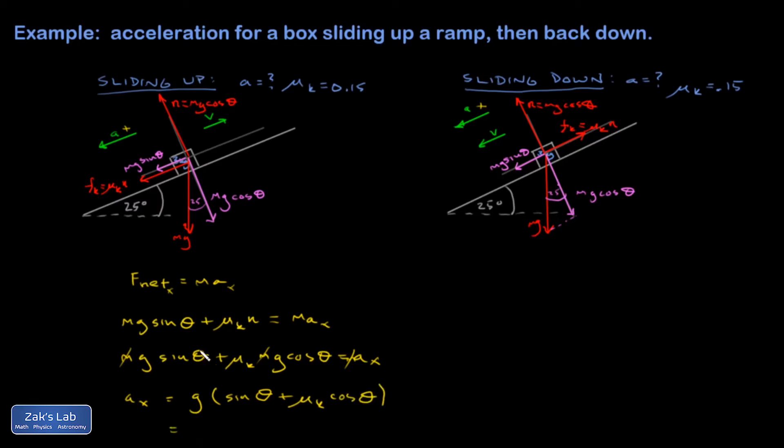And I can plug all the stuff in and find a value for a. So this 9.8 sine of 25 degrees plus 0.15 for the coefficient, cosine 25 degrees. And go to my calculator on that. And I get an acceleration of 5.47 meters per second squared.